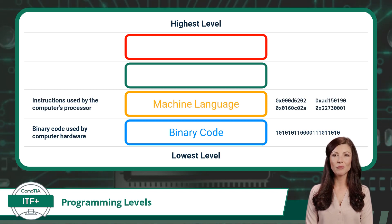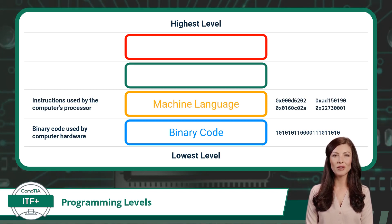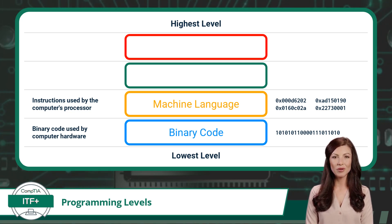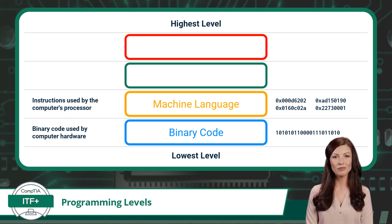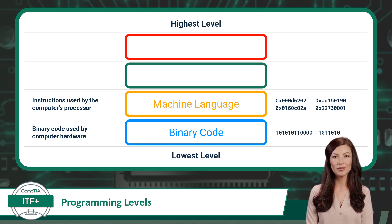Moving up a level, we have machine language or machine code. Machine code consists of hexadecimal representations of binary instructions that are used by the computer's processor to directly control the computer's hardware. This is like the computer's native language, but it's not something humans find easy to work with and is not quite readable.